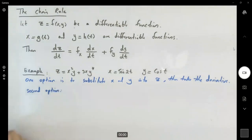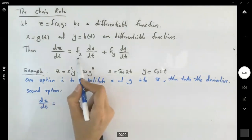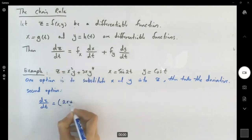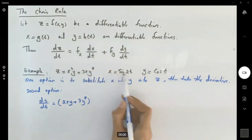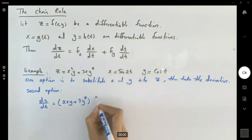Second solution: dz/dt equals the partial derivative of f with respect to x. So we're going to take the derivative with respect to x. We get 2xy plus 3y⁴ times dx/dt. Where is dx/dt? x is sin(2t), so dx/dt is going to be 2cos(2t).